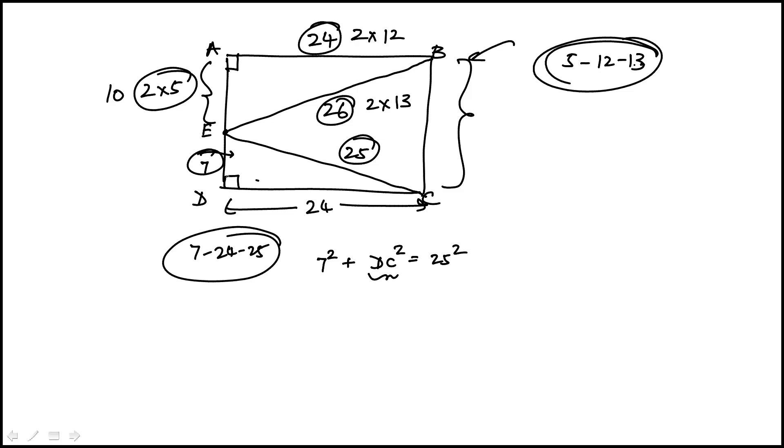So AE is 10, ED is 7, which is equal to BC. So it's 10 plus 7, or 17, which is choice C.